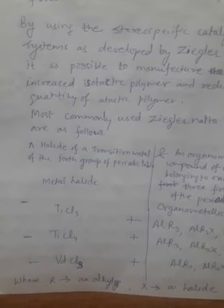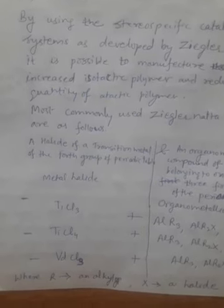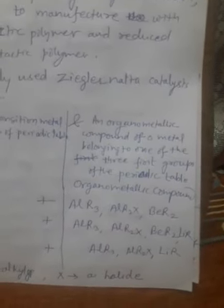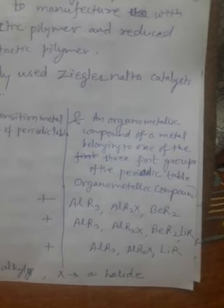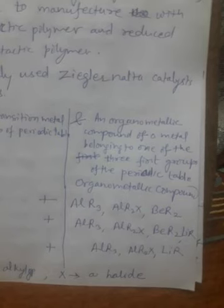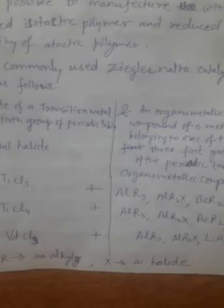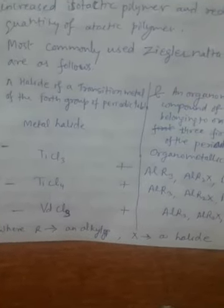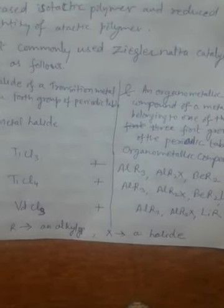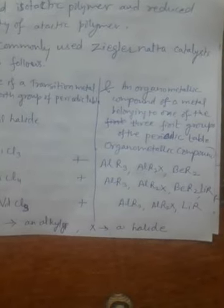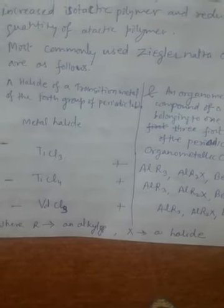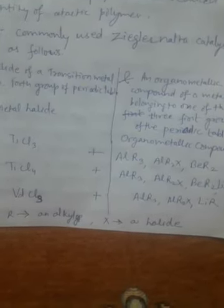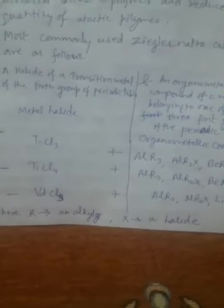The most commonly used Ziegler-Natta catalyst system consists of a halide of a transition metal from the fourth group of the periodic table combined with an organometallic compound of a metal belonging to one of the first three groups of the periodic table. The organometallic compounds used are aluminium R₃, aluminium R₂X, or beryllium R₂, combined with titanium trichloride. Another combination is titanium tetrachloride plus trialkyl aluminium, dialkyl aluminium halide, beryllium dialkyl, or lithium alkyl. Vanadium chloride combined with trialkyl aluminium, dialkyl aluminium halide, or lithium alkyl is also an option, where R denotes an alkyl group and X denotes a halide group.